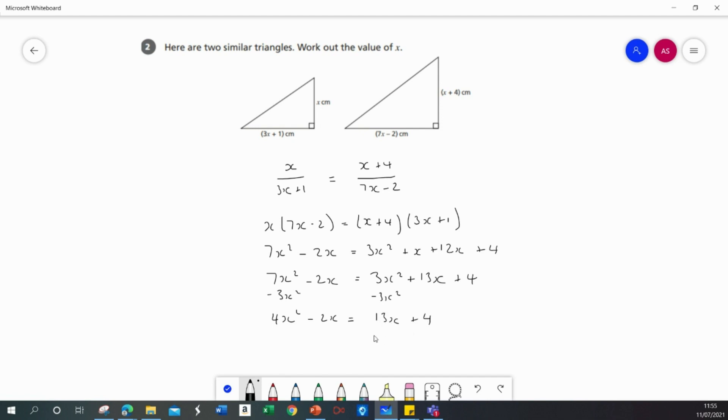Then I'm going to subtract the 13x and the 4 from both sides. Which leaves me with 4x squared minus 15x minus 4 equal to 0.